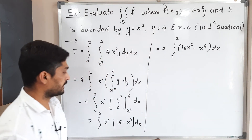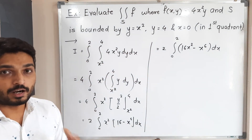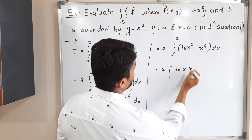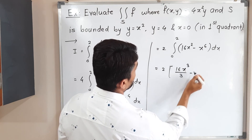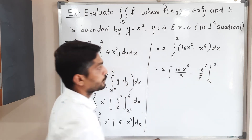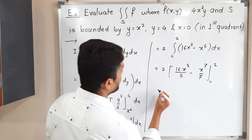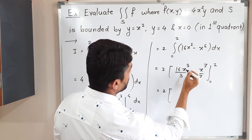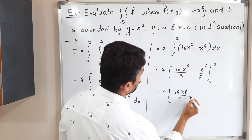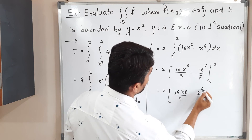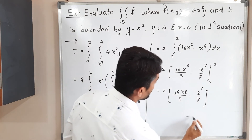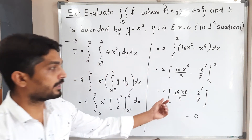Now we integrate 2 times the integral from 0 to 2 of (16x² − x⁶) dx. The integration of x² is x³/3 and the integration of x⁶ is x⁷/7, with limits 0 to 2. Putting the upper limit 2: 16 times 8 divided by 3 minus 2⁷ divided by 7, which is 128/3 minus 128/7. Putting 0 gives 0, so we subtract 0.